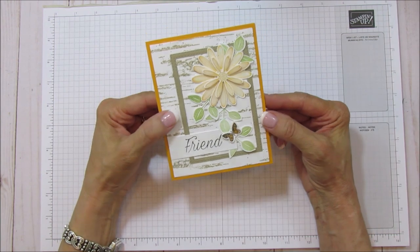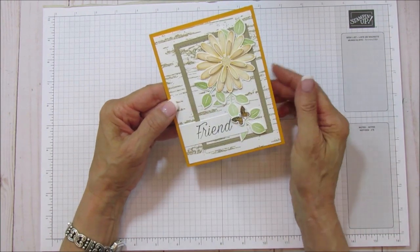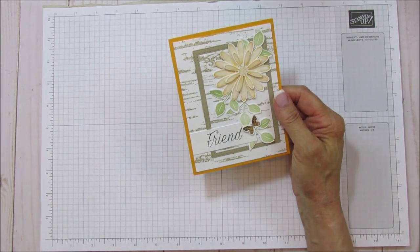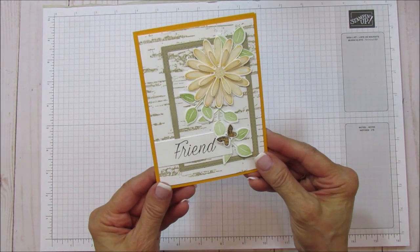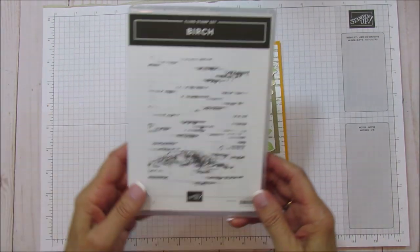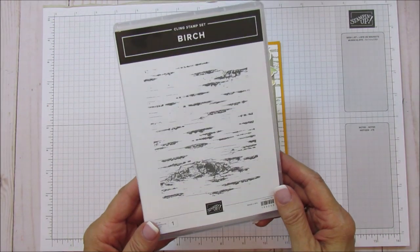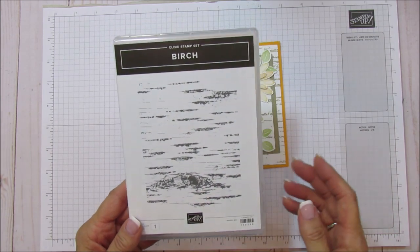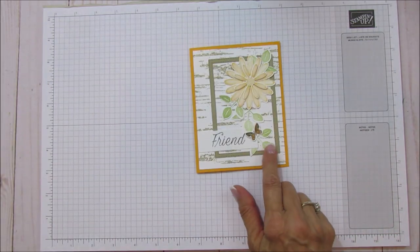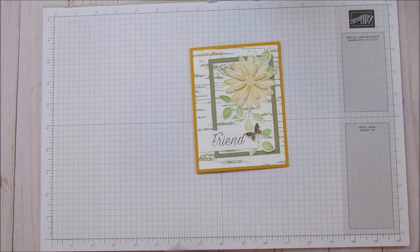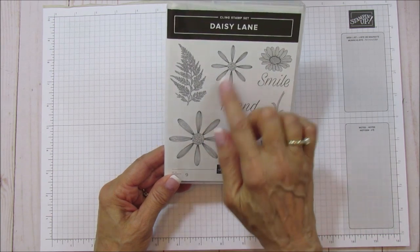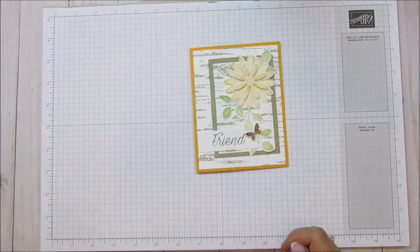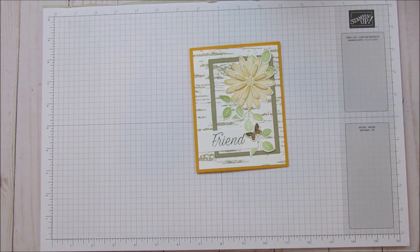I love this background for this daisy and the background stamp that we're using today is the Birch background stamp by Stampin' Up! which is this one right here. I just love this. It's so pretty and especially behind these daisies.